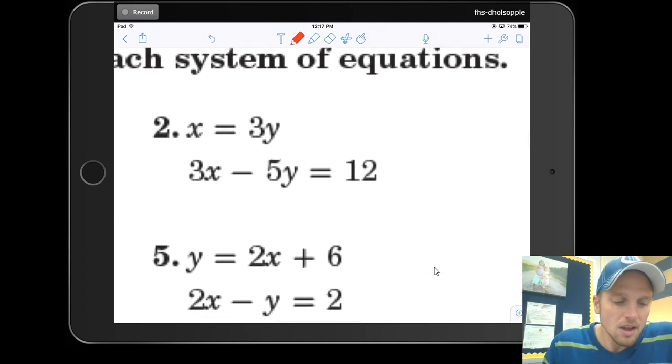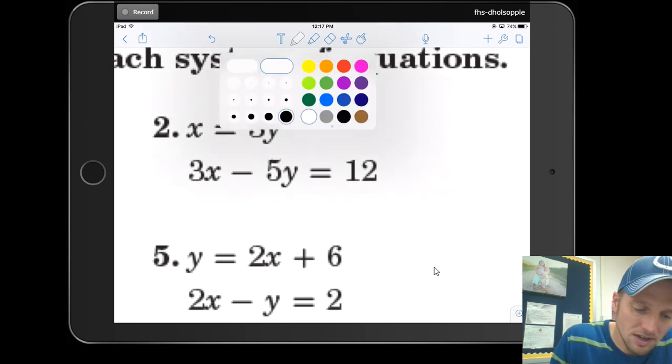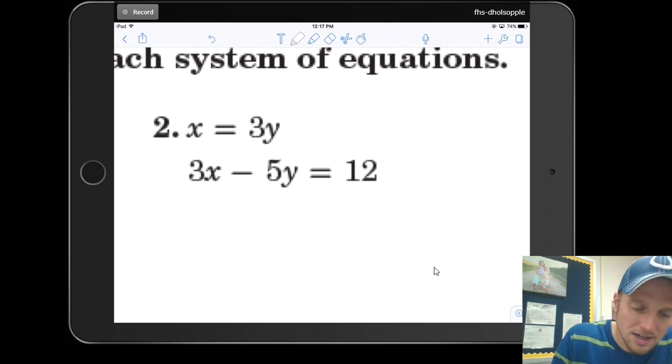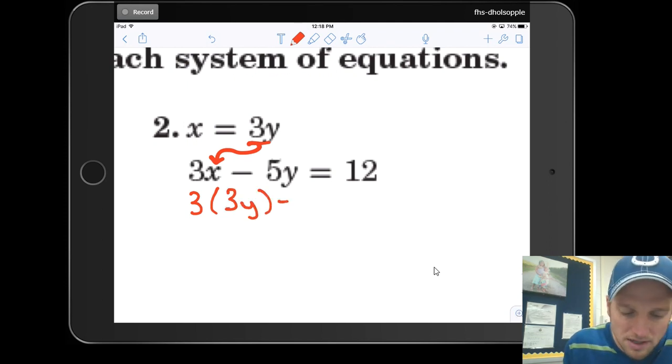Let's go over, and what if I do number 2? Number 2, I see that x is equal to 3y. So I'm going to put 3y in for x in this second equation. So let's see what happens when I do that. I've got 3 times, not x, but my x is now going to be 3y minus 5y is equal to 12.